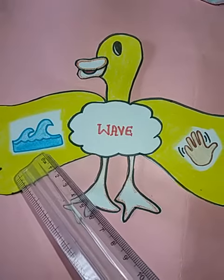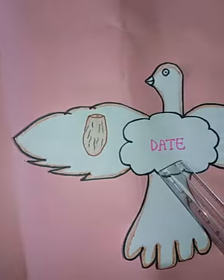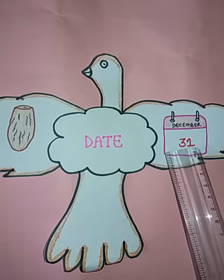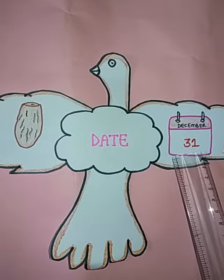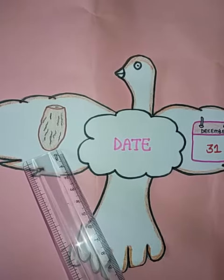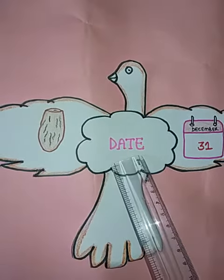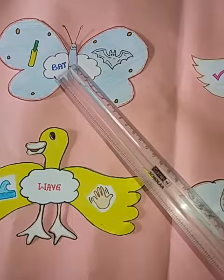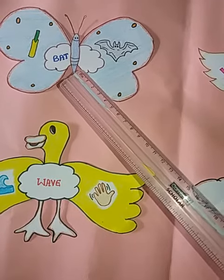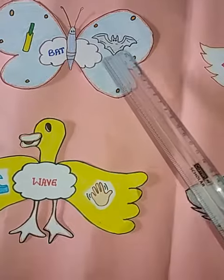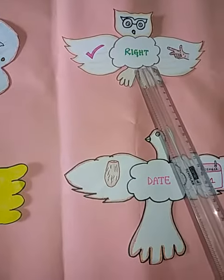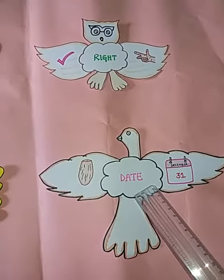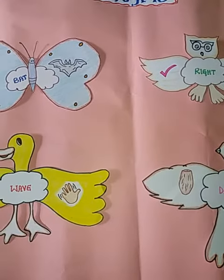Next is 'wave' — here is a waving hand, and another meaning is ocean waves. Then 'date' — December 31st is a date, and another meaning is the dry fruit called date. The words are the same but the meaning is different.